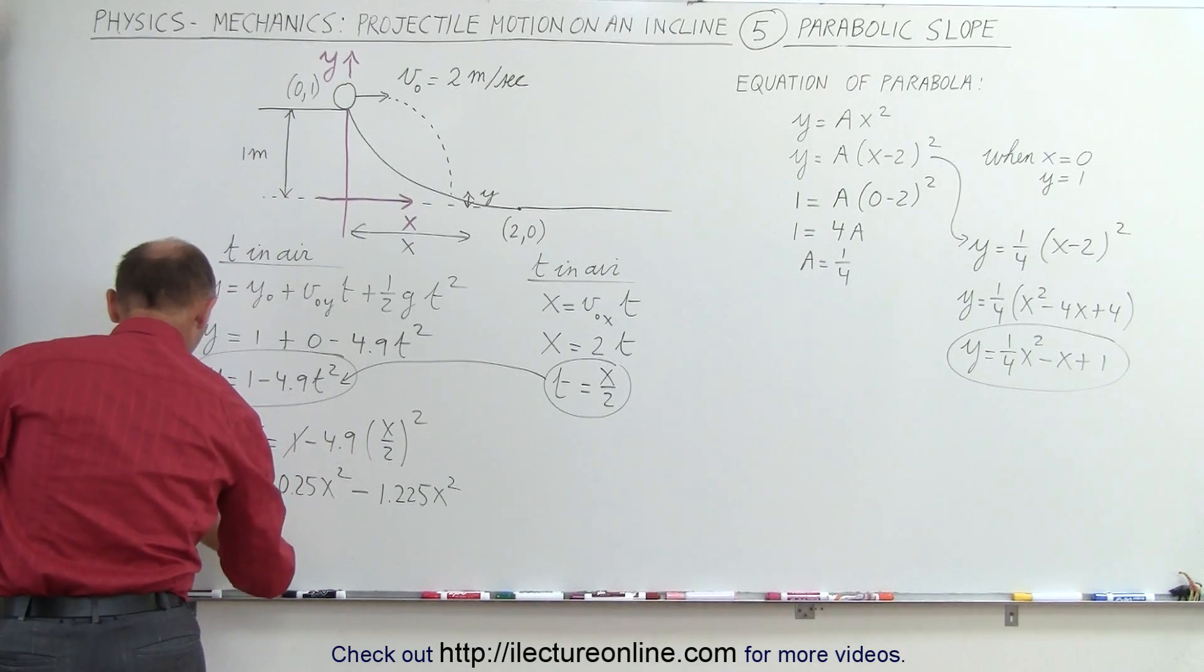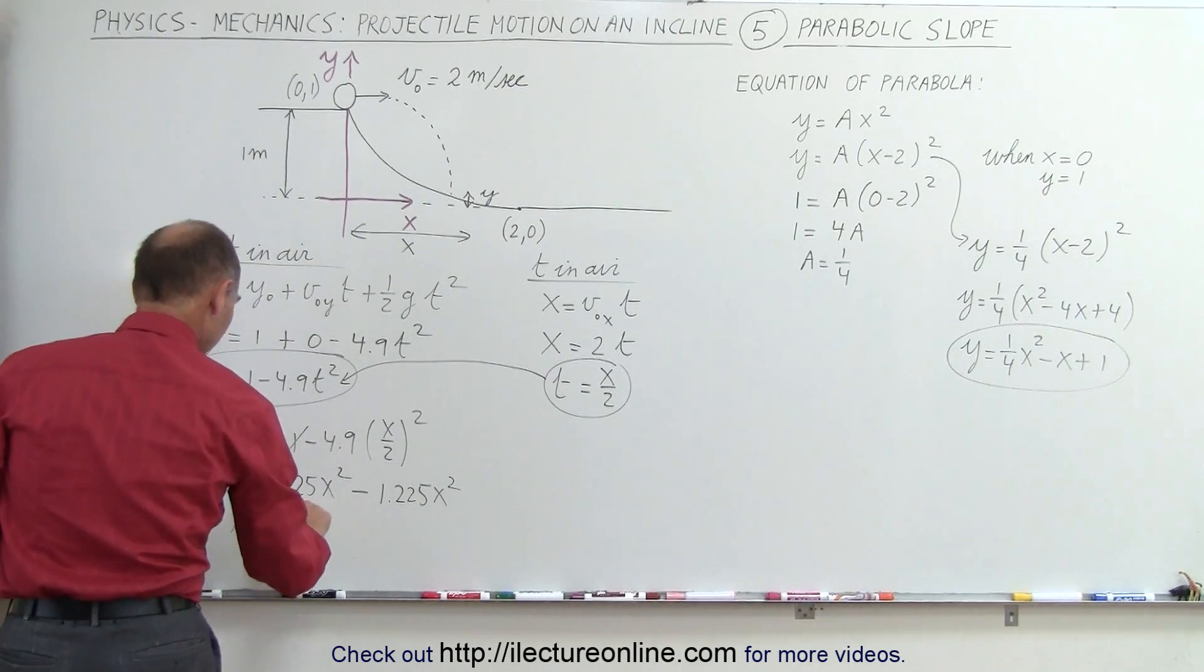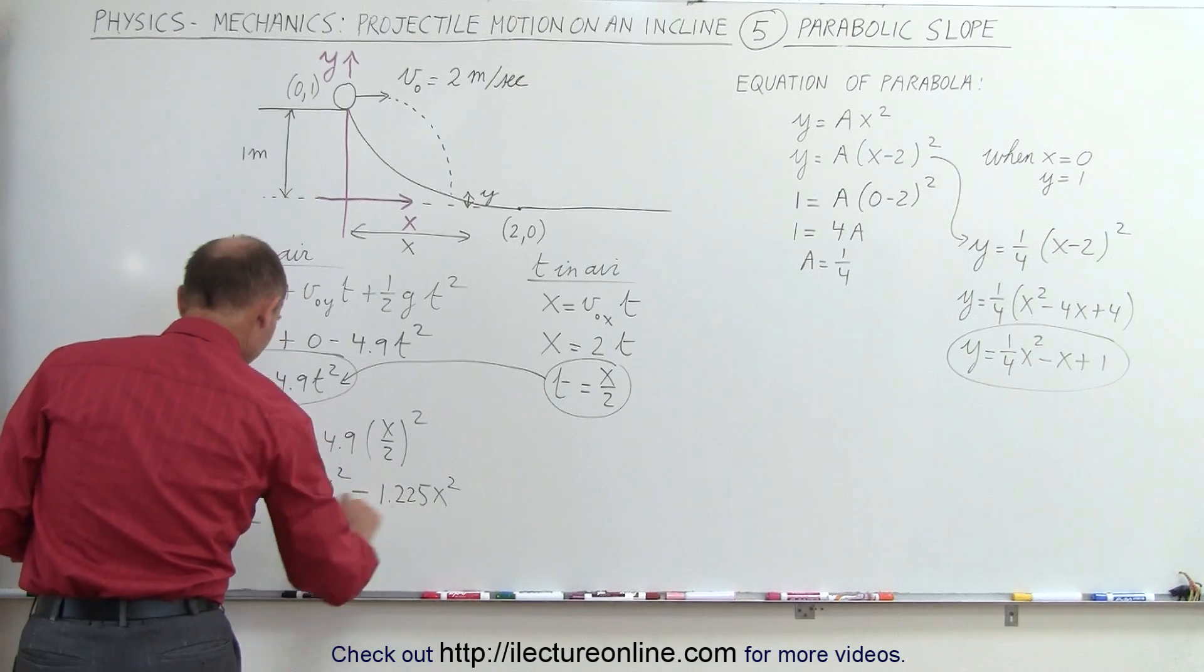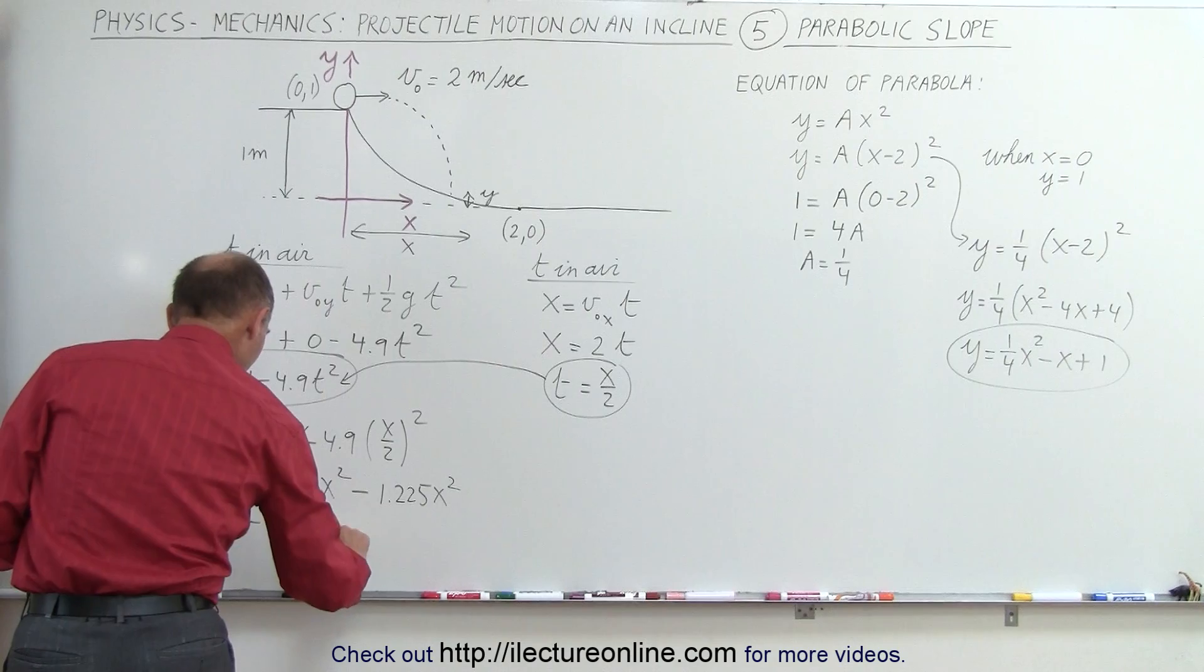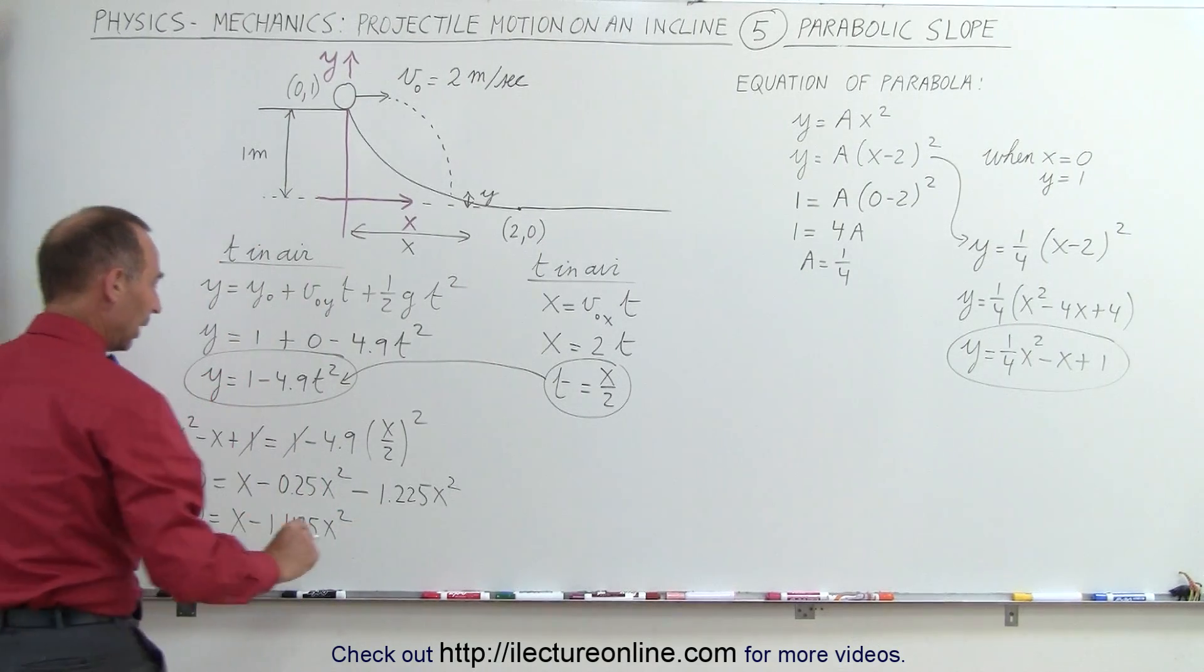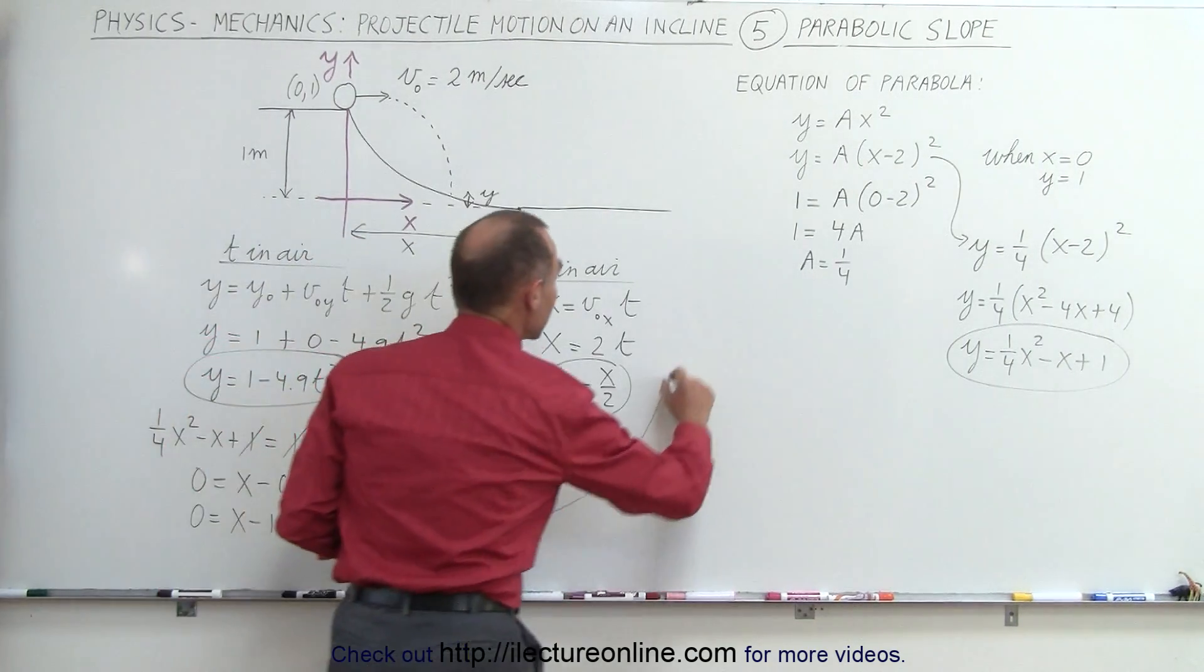that gives us 0 is equal to x minus, that would be 475. So 1.475x squared, which finally means when we pull out an x, let me come up here,